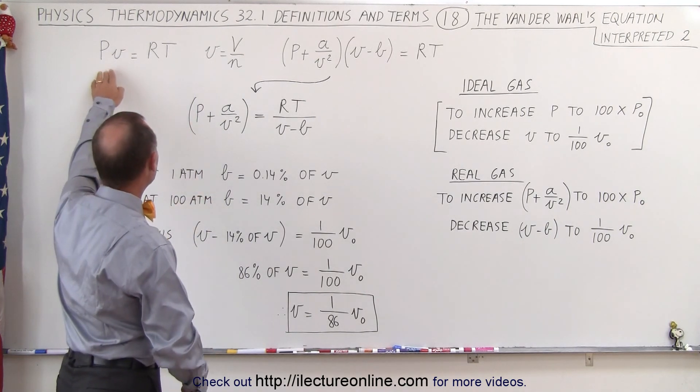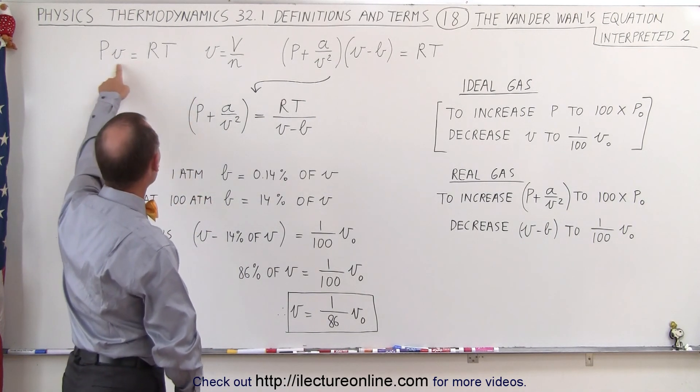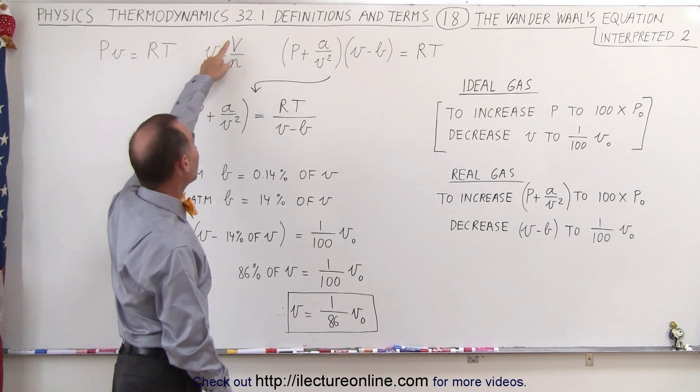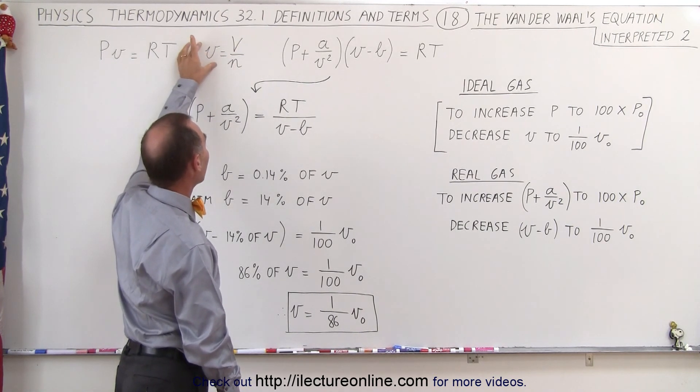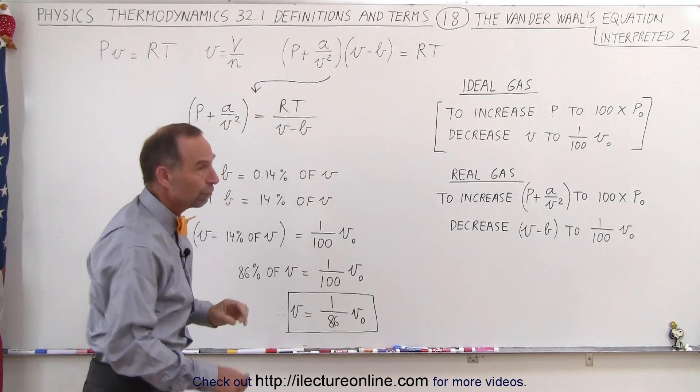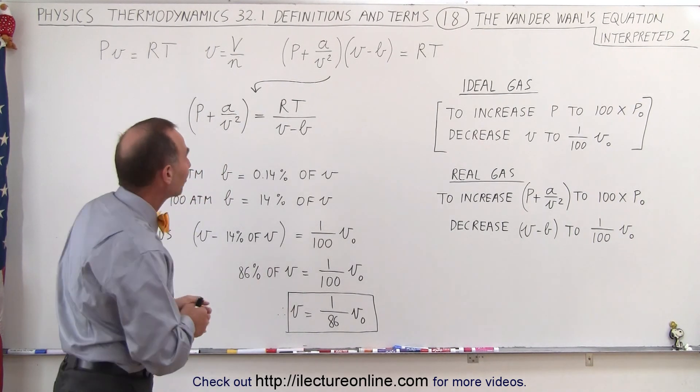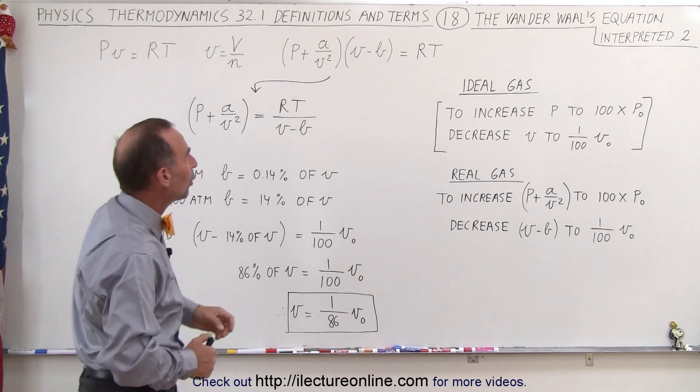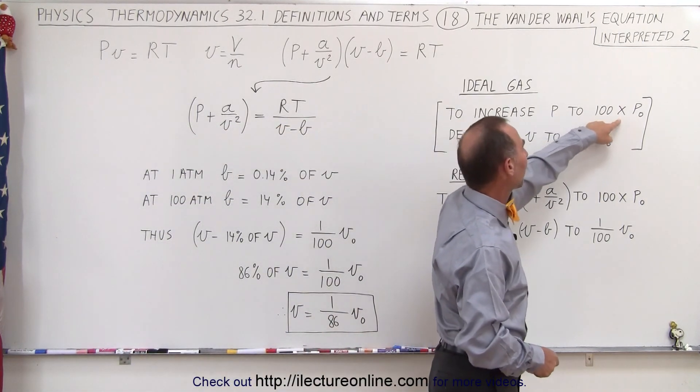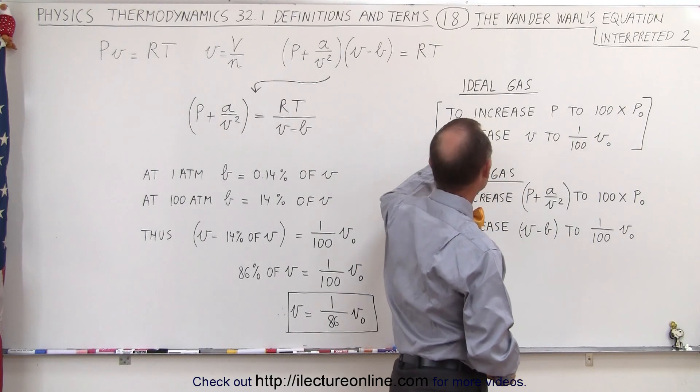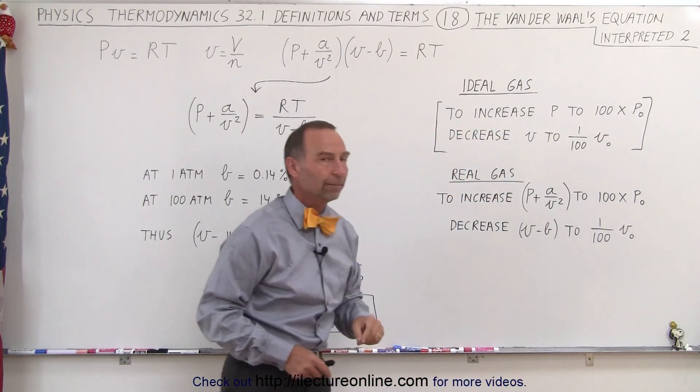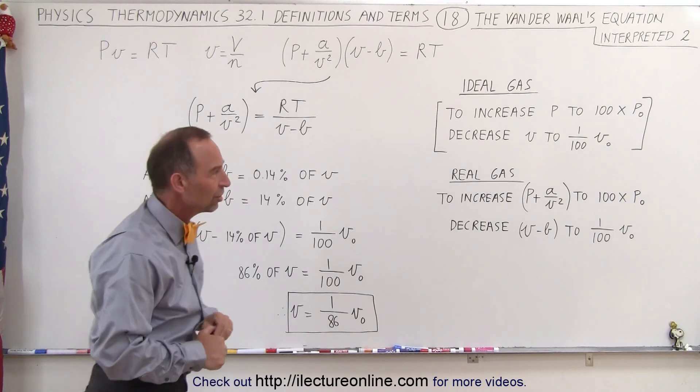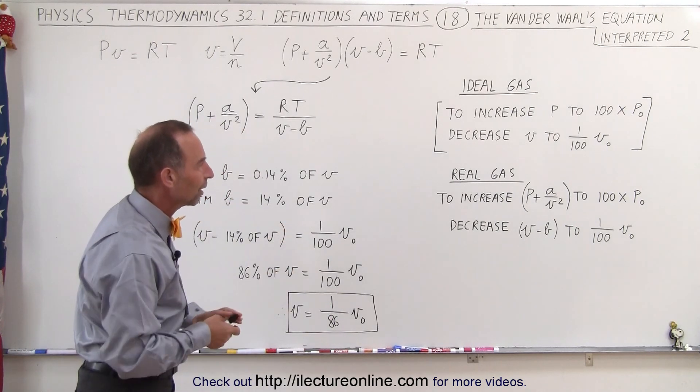Now with an ideal gas where we have PV equals nRT, or small v being v over n, meaning the volume divided by the number of moles, that gives us the volume per mole or the volume per kilomole in standard units. Then we know that in order to increase the pressure to 100 times the original pressure, all we have to do is decrease the volume to 1/100 the original volume. Of course there might be a change in the temperature as well, but we're ignoring that for now.